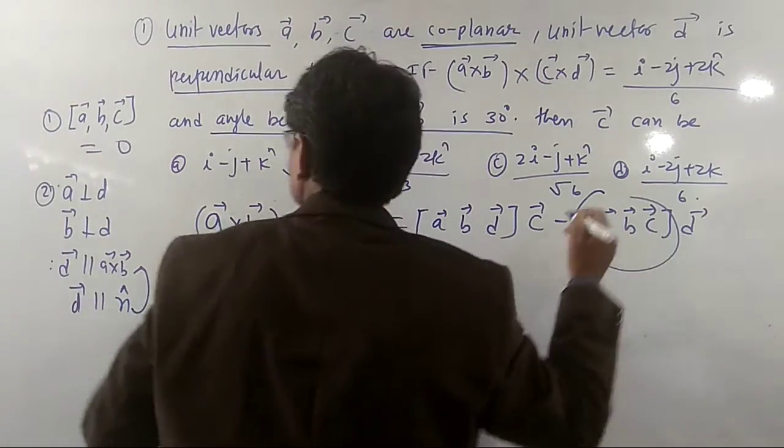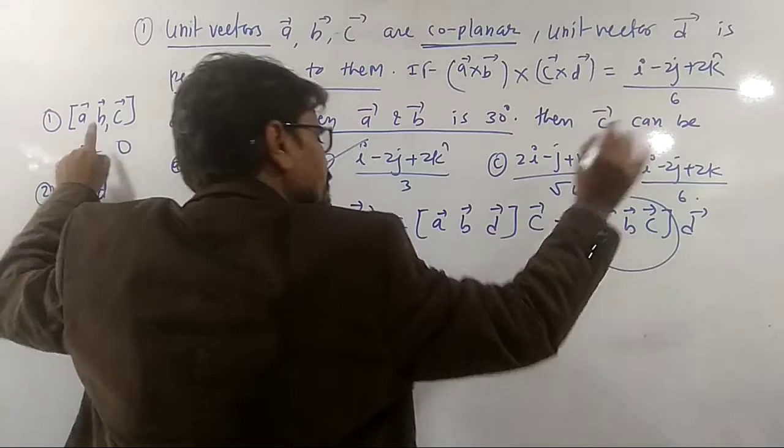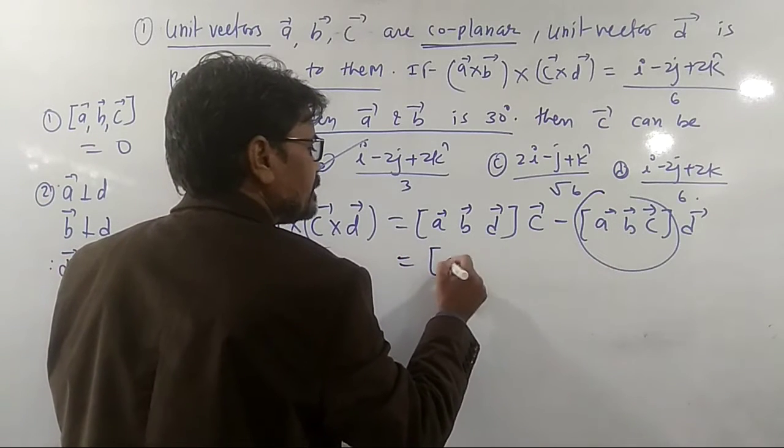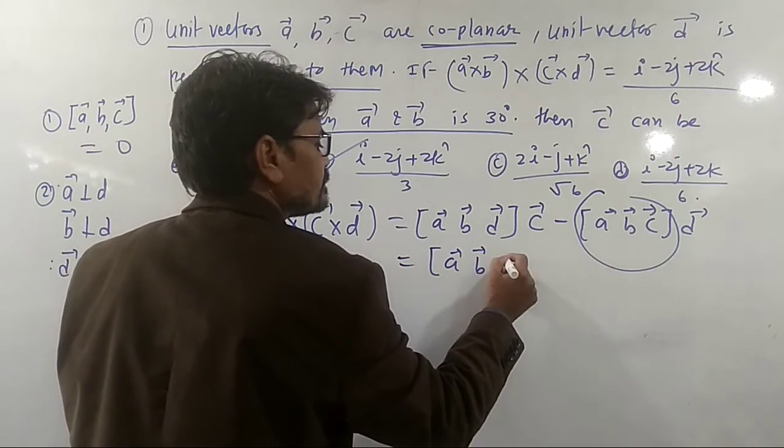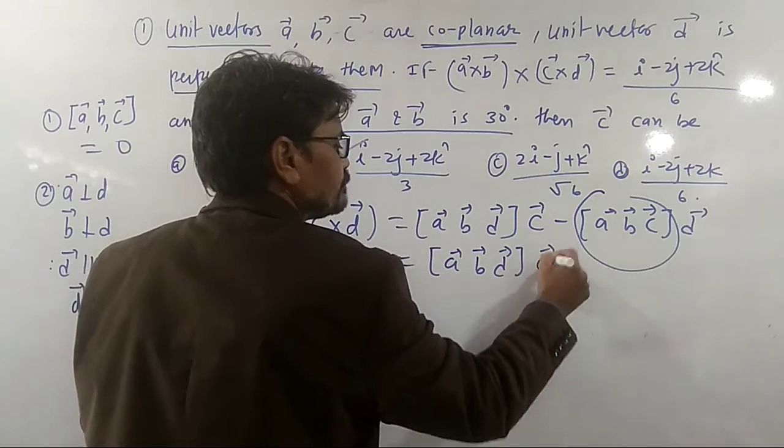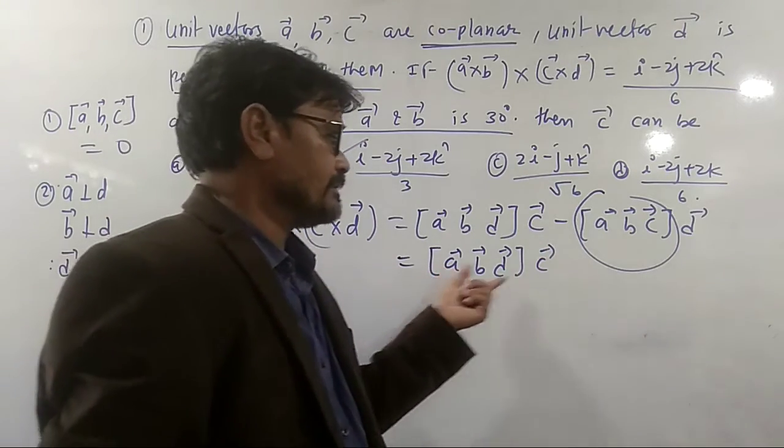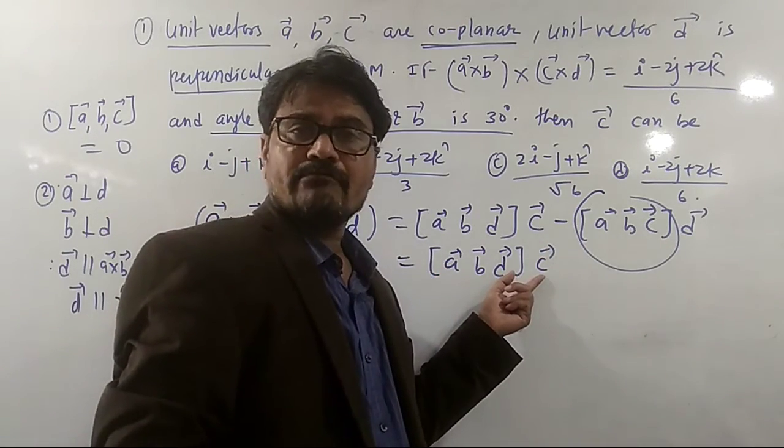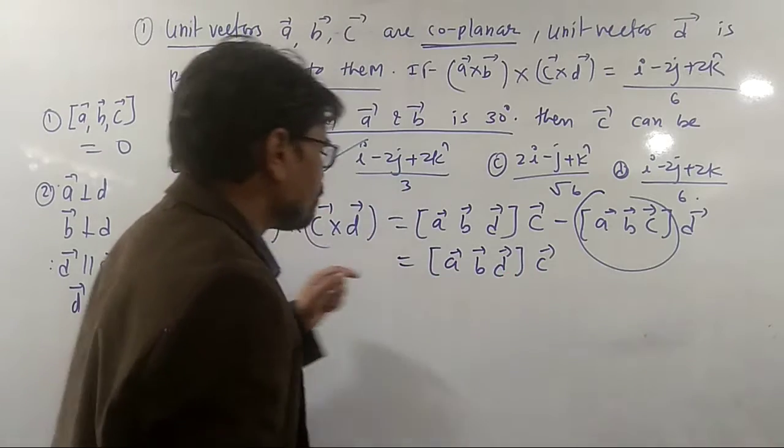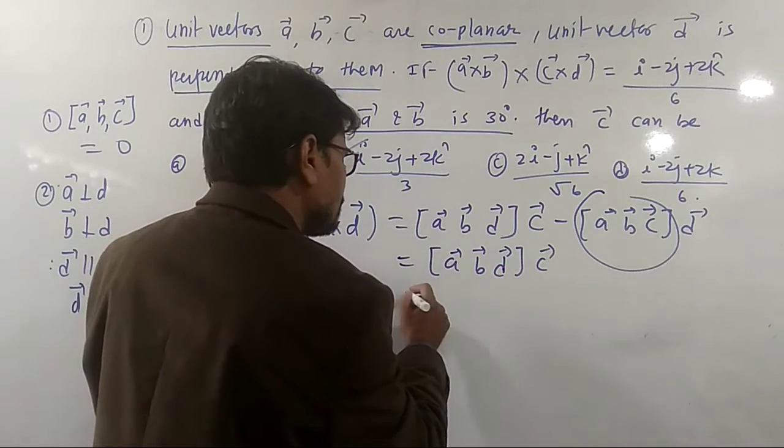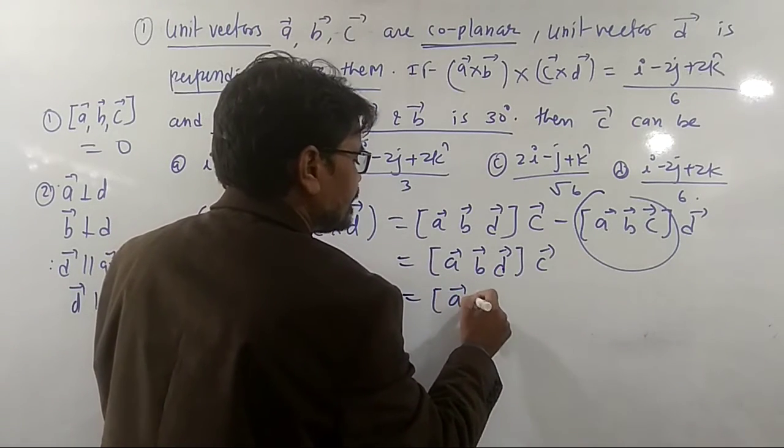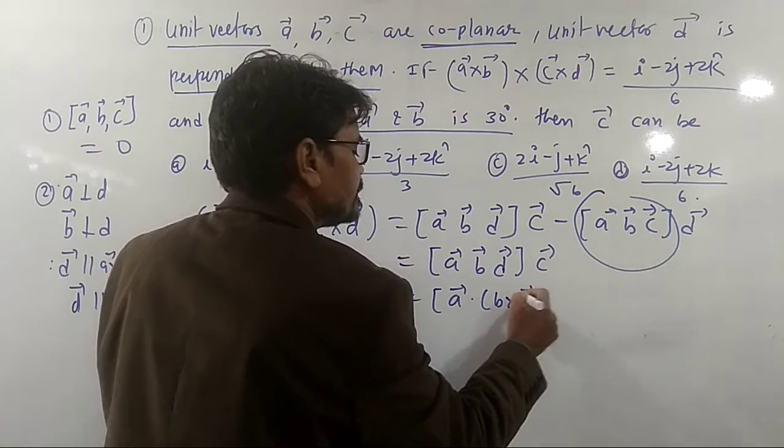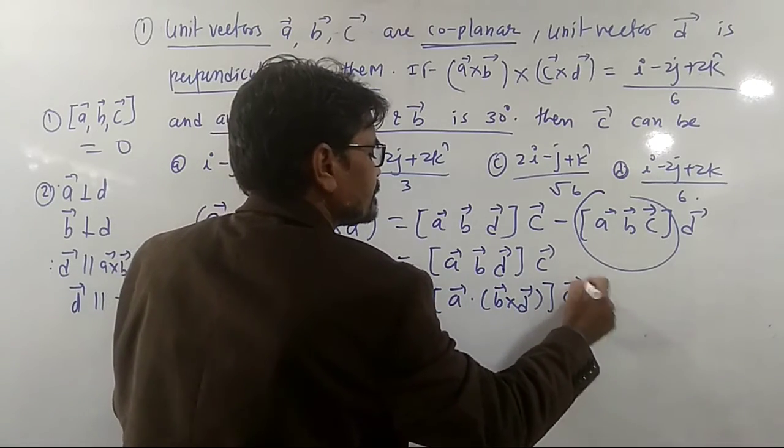Here A, B, C scalar triple product is already given, so this becomes zero. You must get simply A, B, D scalar triple product into C. This is scalar quantity and this is vector. We can multiply vector by any scalar quantity. Now by the definition of the scalar triple product, this can be written as A dot B cross D into C.